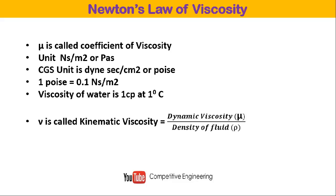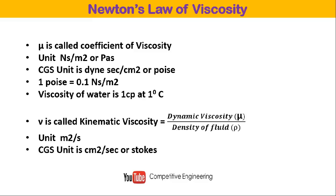Kinematic viscosity, denoted by the Greek letter nu, is the ratio of dynamic viscosity to the density of the fluid. If you know the dynamic viscosity, you can find the kinematic viscosity by dividing by the fluid density. The unit of kinematic viscosity is meter squared per second in SI, or centimeter squared per second in CGS — also called Stokes. One Stokes equals 10⁻⁴ meter squared per second.